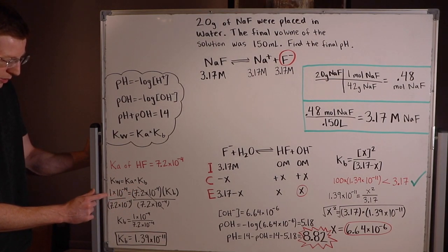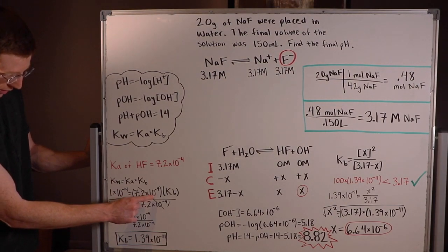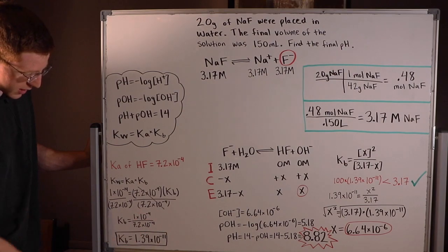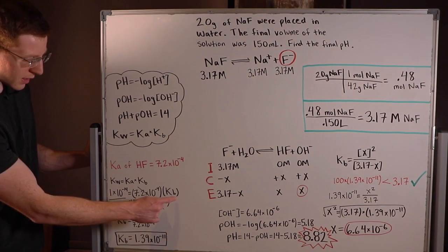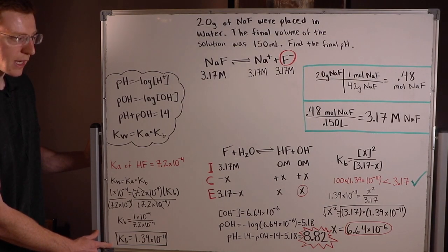We know Kw is always going to be 1 × 10⁻¹⁴ and we know Ka is 7.2 × 10⁻⁴. Divide both sides by 7.2 × 10⁻⁴ and you're able to solve for Kb and you find that it's 1.39 × 10⁻¹¹.